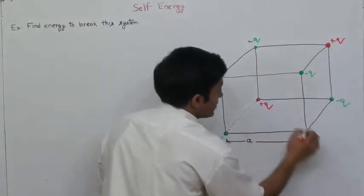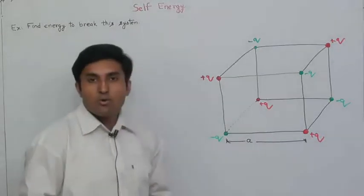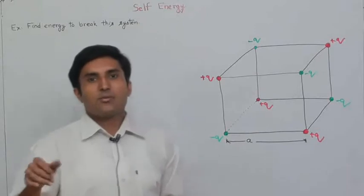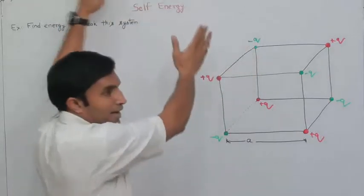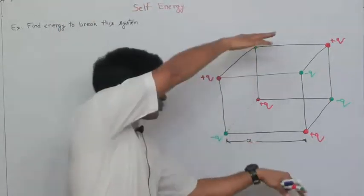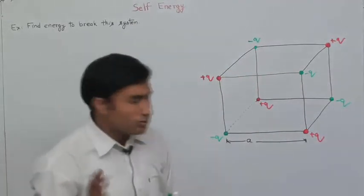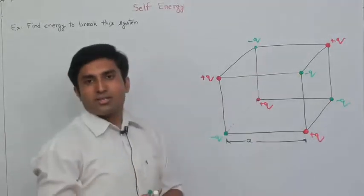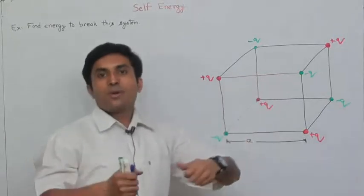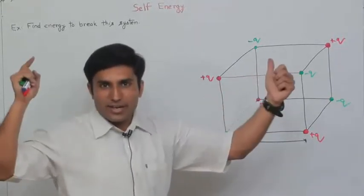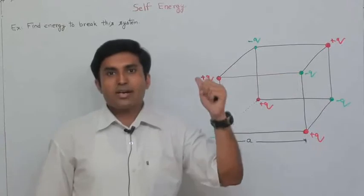The question asks to find the potential energy, or self energy. What happens when you calculate the self energy? You assume that all these parts are at infinity and you are bringing them to a particular configuration. That's the amount of work done to assemble this. But when you break it, you reverse the sequence: you break this and put the charges at infinity. Your sequence of events has been reversed but the work has to be the same.